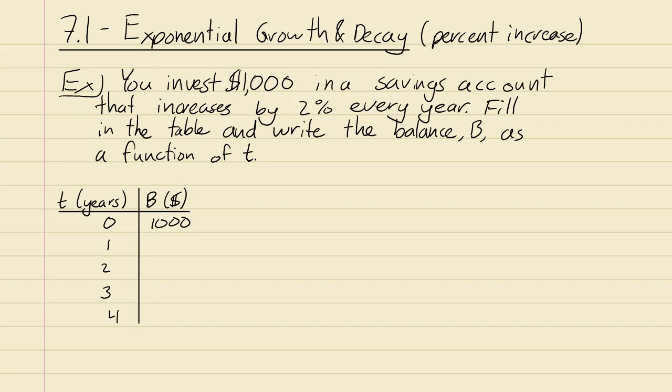Let's fill in the table and write a function that gives the balance B as a function of t. T equals zero means right when you invest it, t equals one means one year later. So let's figure out how to get this.